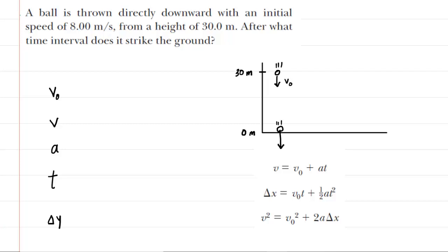A ball is thrown directly downward with an initial speed of 8 meters per second from a height of 30 meters. After what time interval does it strike the ground?